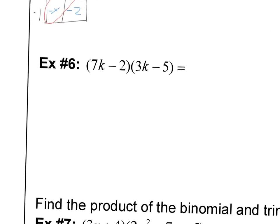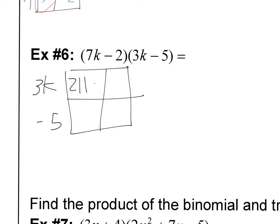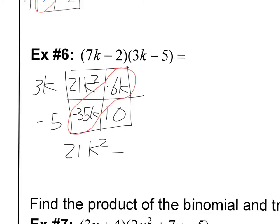What happens if you get problems like this where there are actually coefficients? No problem — still just going to construct the box. 3K on one side, negative 5 down here. 3 times 7 is 21 and K times K is K squared. Negative 2 times 3K is negative 6K. Negative 5 times 7K is negative 35K. And negative 5 times negative 2 is positive 10. You have your like terms and they're both negative, so we've got 21K squared minus 41K plus 10.